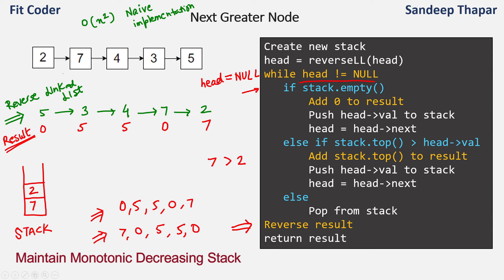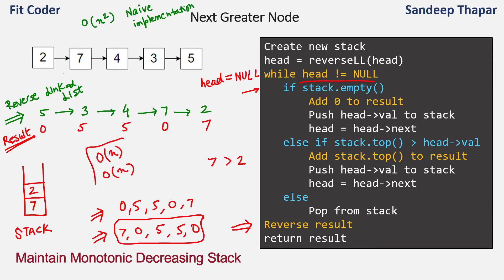In summary: first we reverse the linked list, then we traverse it and based on the three if-else conditions, we either pop from the stack or push to the stack and append to the result. Once the linked list is traversed, we reverse the result array to get our final answer. The time complexity of this method is O(n) and the space complexity is also O(n) because we maintain an external stack. By using some extra space, we have reduced time complexity from O(n²) to O(n).